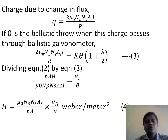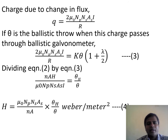Dividing equation 2 by equation 3, we have: N times A times H upon (mu-naught times NP times NS times AS times I) equals theta H upon theta. Hence, the expression for H can be obtained by rearranging: H = mu-naught times NP times NS times AS upon (N times A) times (theta H upon theta). This is the expression for the horizontal component of Earth's magnetic field.